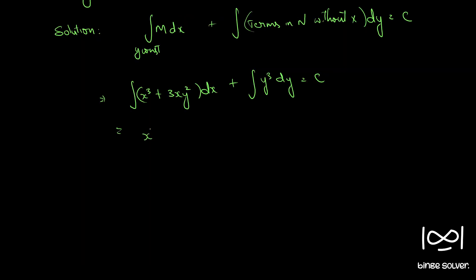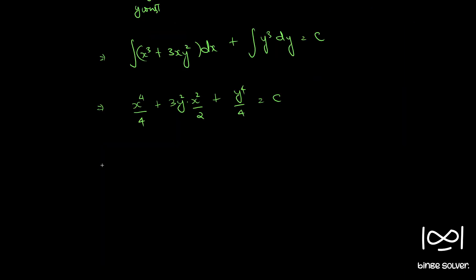Evaluating: x raised to 4 by 4, plus taking y as a constant, 3y squared into x squared by 2, plus y raised to 4 by 4 equals c. Multiplying throughout by 4, we have x raised to 4 plus 6x squared y squared plus y raised to 4 equal to c dash, where c dash is an arbitrary constant equal to 4c.